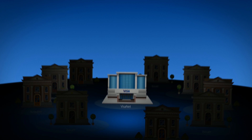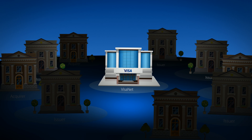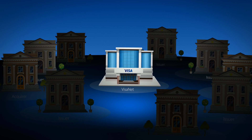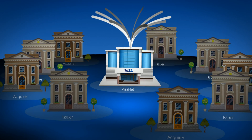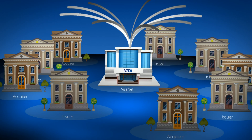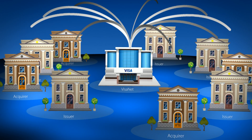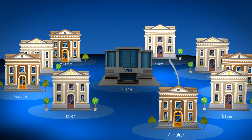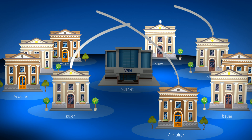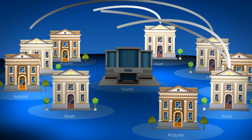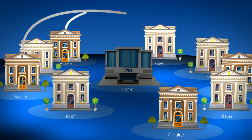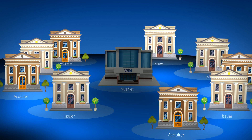This step is known as settlement. During the settlement process, VisaNet consolidates every electronic payment transaction worldwide and sends consolidated net settlement statements to the participating issuers and acquirers. Funds are then transferred between each institution with account activity to settle all transactions that have occurred within a specific processing day. At this point, the process is complete.